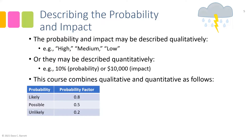This course combines aspects of qualitative and quantitative assessment. When estimating the probability, there are three qualitative categories: likely, possible, and unlikely. A factor is assigned to each — if the team selects likely, a probability factor of 0.8 is assigned; if possible, 0.5; and if unlikely, 0.2. It's important to note these probability factors are not percentages. So don't interpret likely as meaning 80% probability.